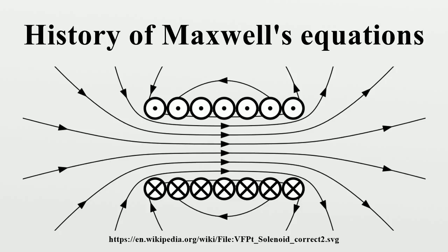In textbooks and in classrooms the law F equals ma is attributed to Newton, but his second law was in fact F equals ṗ, where ṗ is the time derivative of the momentum p. This seems a trivial enough fact until you realize that F equals ṗ remains true in the context of special relativity. The equation F equals ṗ is clearly visible in a glass case in the Wren Library of Trinity College, Cambridge, where Newton's manuscript is open to the relevant page.